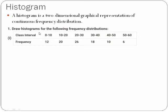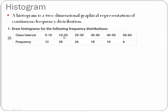Let's see one example on histogram. I am taking these questions from your Exercise 23. Question number 1, sub-number 1 says: draw histograms for the following frequency distribution. Here we are doing histogram for continuous frequency distribution. The class intervals are: 0–10, 10–20, 20–30, 30–40, 40–50, and 50–60. These are called class intervals.